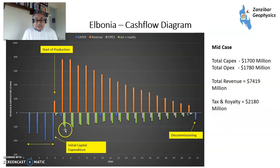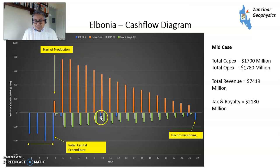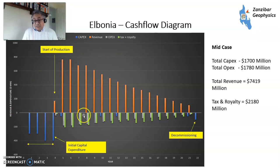This is the cash flow diagram. In blue is CAPEX. In light blue is tax. Then you have your revenue, your OPEX, and the small CAPEX for infill production wells. And that's your decommissioning expenditure. Production starts after about four years, which is roughly how long that would take.